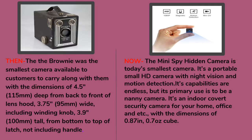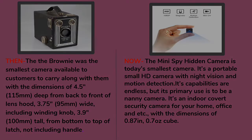Today, thanks to digital technology, you can view pictures and videos instantaneously with a smartphone. The Mini Spy hidden camera is today's smallest camera — a portable, small HD camera with night vision and motion detection. Its primary use is as a nanny camera and indoor covert security camera for home, office, and more, with dimensions of 0.87 inches and weighing 0.7 ounces as a cube.